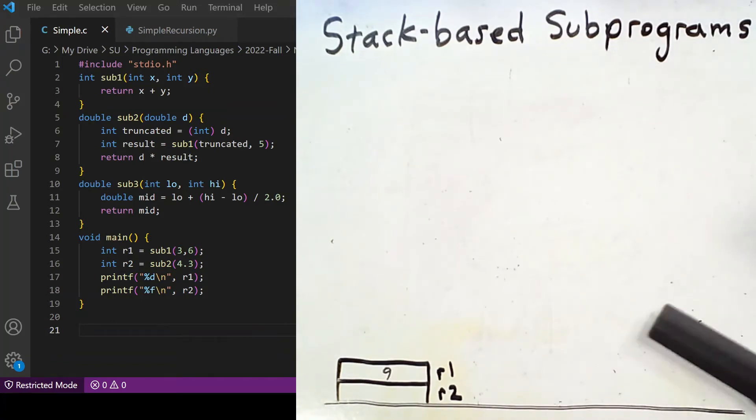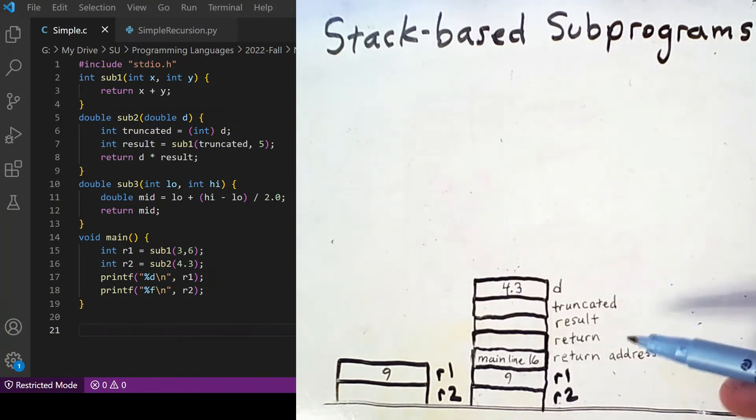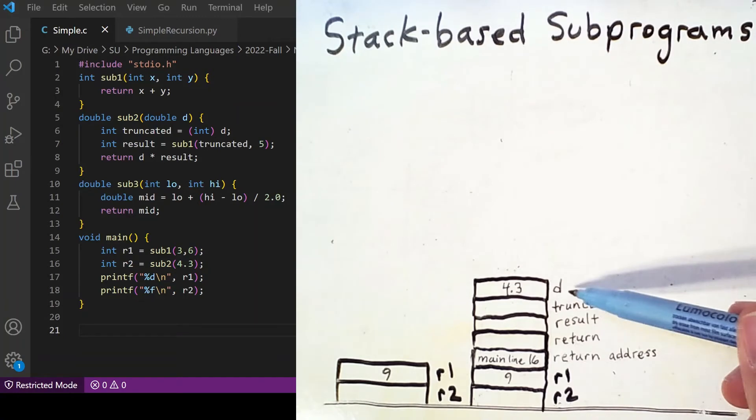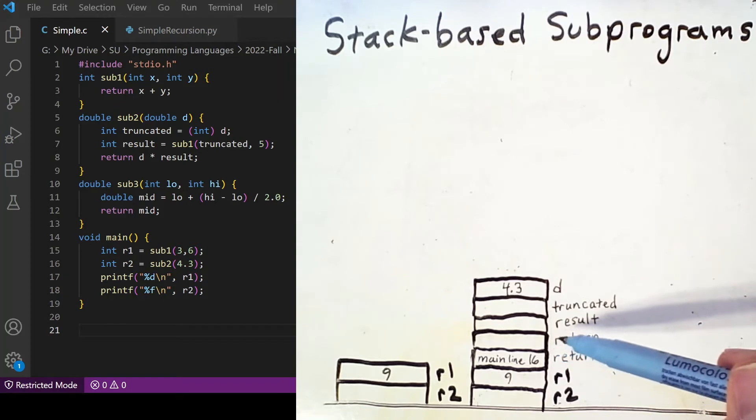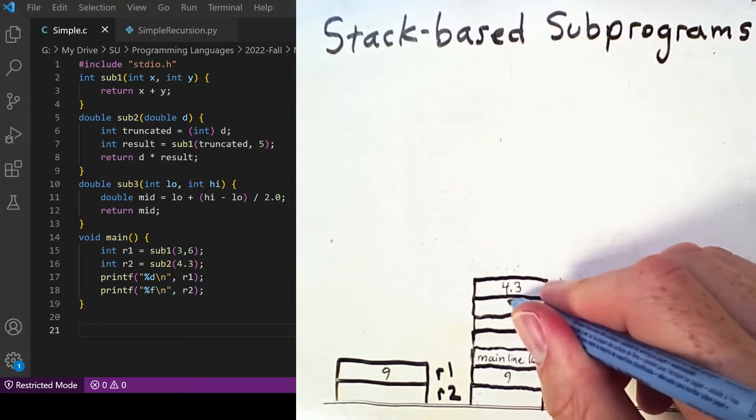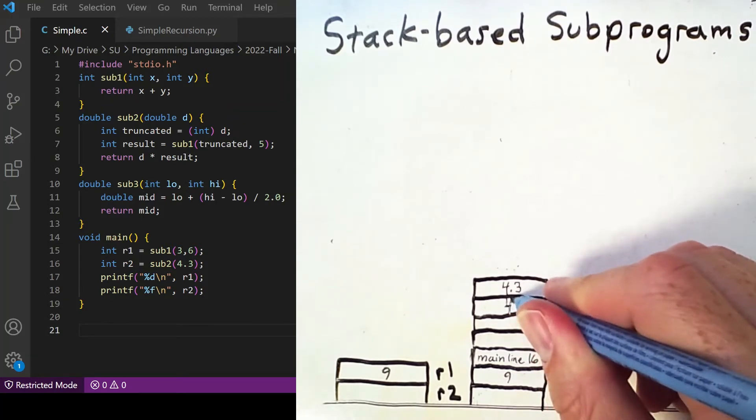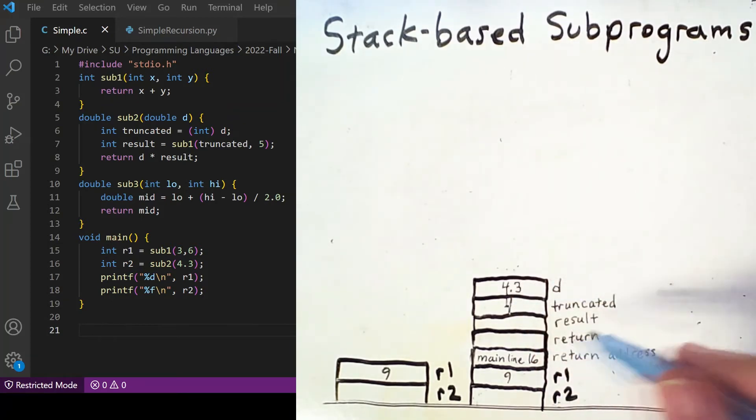The next thing that the main function does is call sub-2. So now we'll put that activation record on top of the stack. The next activation record has the parameter value for D and the return address filled in, and the rest of the values get filled in during execution. Truncated takes on a value of 4. However, to get the value for result, we must make another function call. We call sub-1.